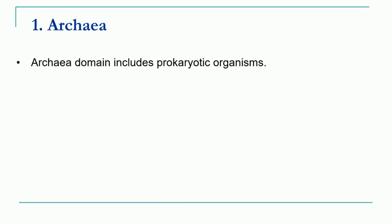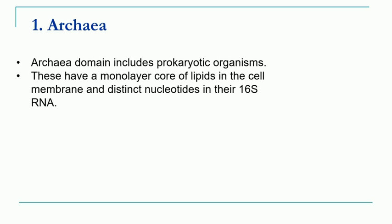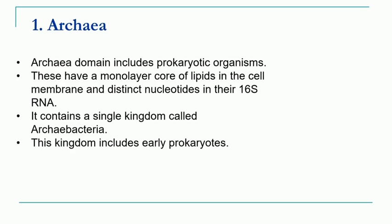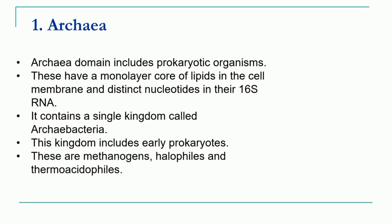Let's see the characters of Archaea. Archaea, or basically the archaebacteria, are nothing but the ancient bacteria. They are prokaryotic organisms, and all this classification is based on ribosomal RNA studies. 16S rRNA studies were done and based on this they were classified into Archaea or into the eubacteria. This kingdom includes early prokaryotes — all the ancient prokaryotes were included in kingdom Archaea. These were basically the extremophiles: methanogens which can live in high concentrations of methane, halophiles which can live in high concentrations of NaCl, and thermoacidophiles which can live at higher or lower temperature conditions as well as acidic conditions.